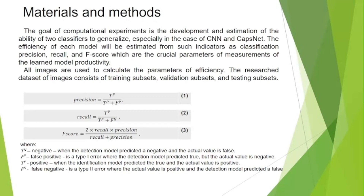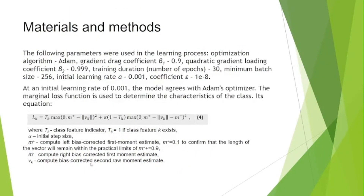Formulas 1, 2 and 3 for computing these indicators are shown on this slide. The research dataset of images consists of training sets, validation sets and testing sets. The initial learning rate is 0.001. The model uses the Adam optimizer. Other parameters are shown on this slide. The marginal loss function is used to determine the characteristics of each class, and its equation is shown in formula form on this slide.